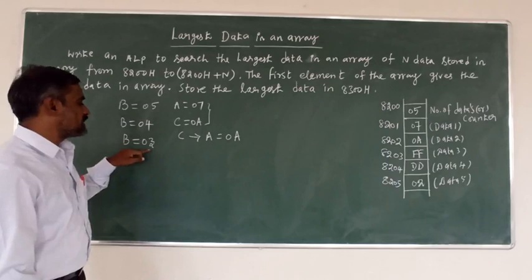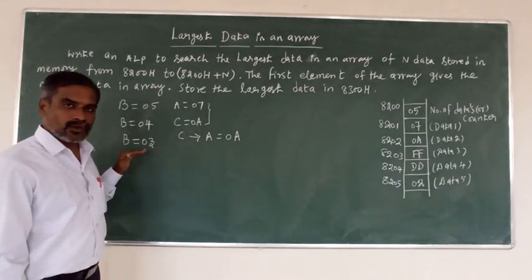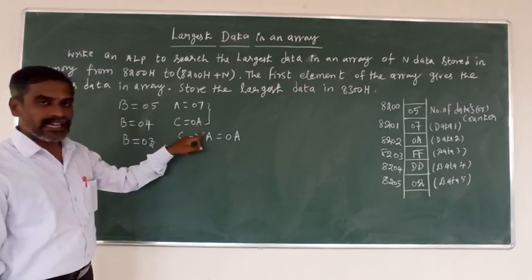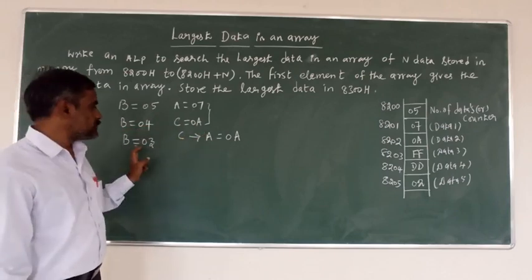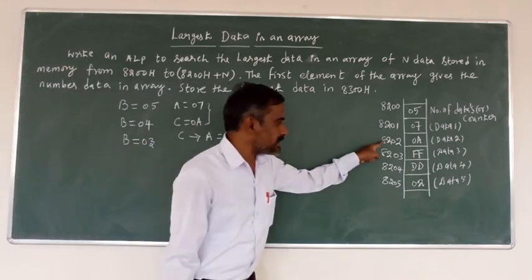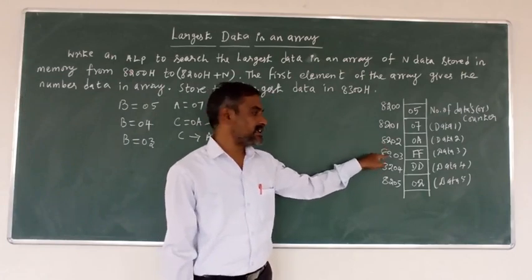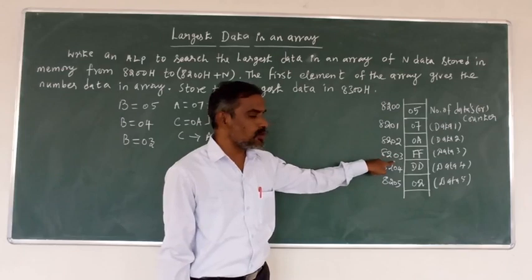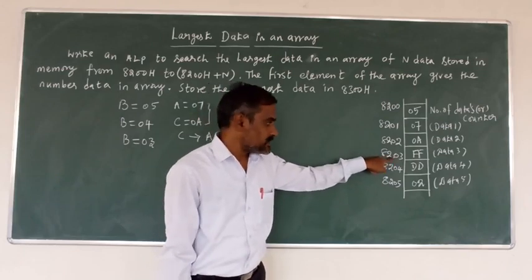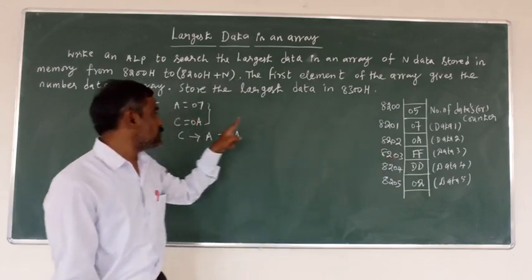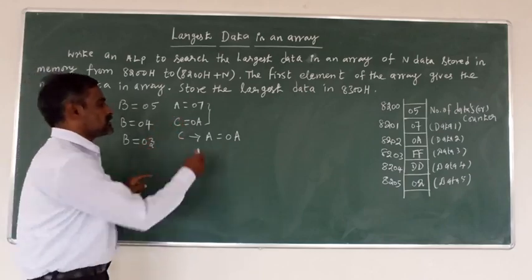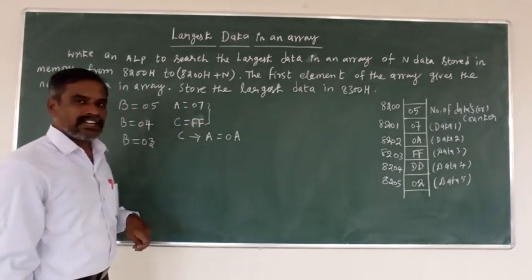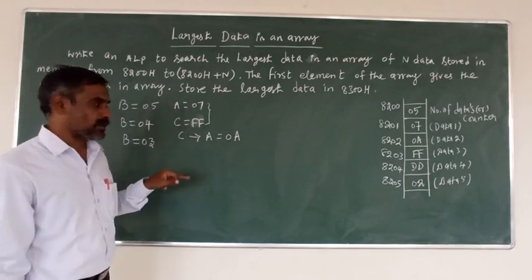We check whether B is zero or not - no, it's not zero, so again jump back. Increment the memory address from 8202 to 8203. Move this data into C register - now C equals 0Fh. Again repeat the same process and compare these two data.